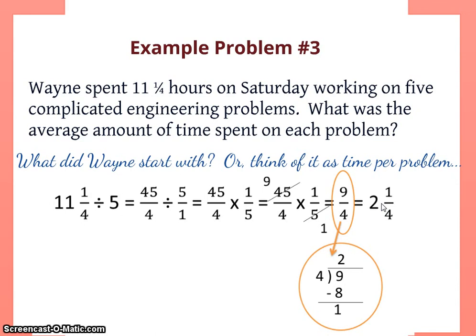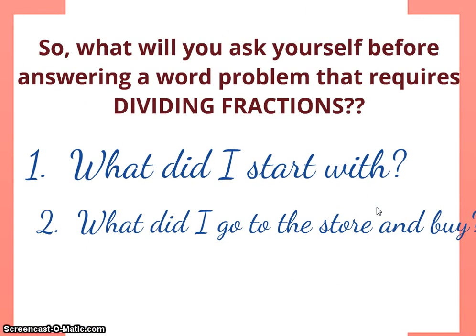So does this answer make sense? He's got a chunk of time divided by 5 problems. Yeah, it does make sense. 5 times 2 is 10, which is kind of close to 11 and 1 fourth hours. So I think I'm correct at 2 and a quarter hours. Again, if I'd gotten these two terms switched, I would have ended up with a weird answer down here and it wouldn't have made sense when I asked myself if the answer I got makes sense.